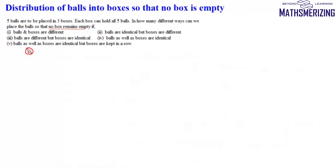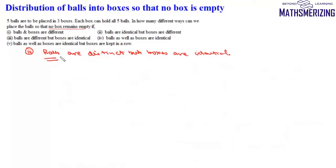Now we will come to this third case when balls are distinct but boxes are identical. So here we have five distinct balls — one, two, three, four and five — and three identical boxes. So now we need to distribute distinct objects into identical boxes.